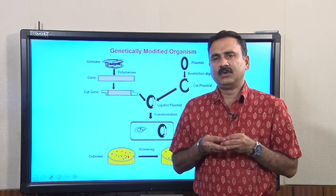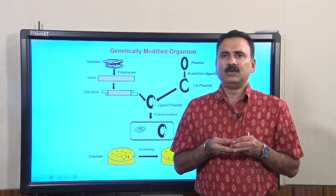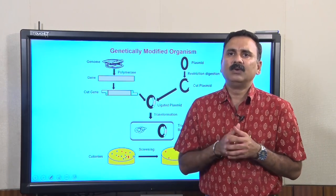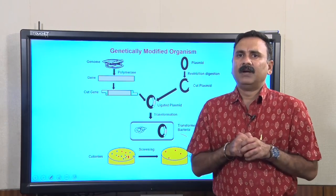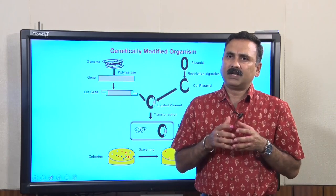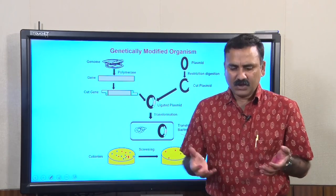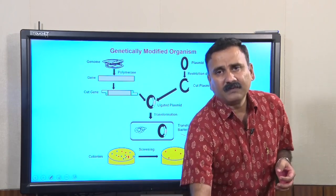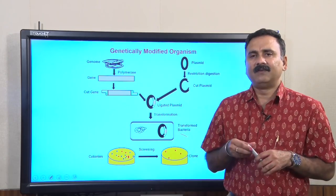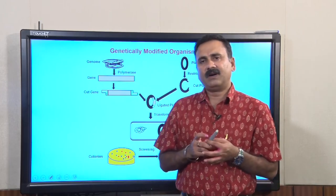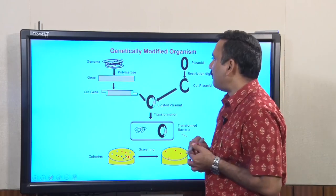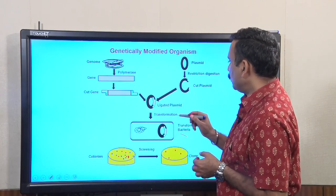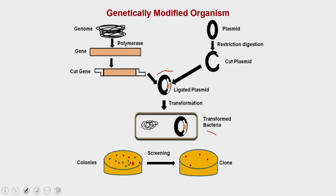We were also discussing the different genetic tools available to perform recombinant DNA technology. Today, we are going to discuss the vector or the transforming agents. So far, we have discussed how to produce the genetically modified plasmid or the recombinant plasmids.